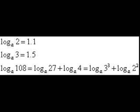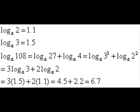27 can be changed into 3 cubed, and 4 is 2 squared. Now we use properties of logarithms to put the 3 and 2 in front, which gives us what we need, as we know what the log base a of 2 is, as well as the log base a of 3. So all we do now is substitute and reduce, and we get the log base a of 108 is 6.7.